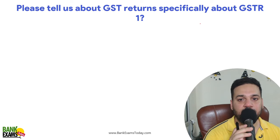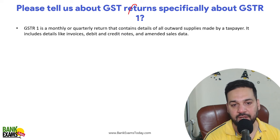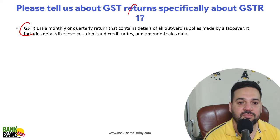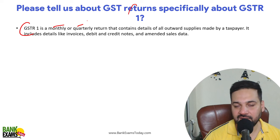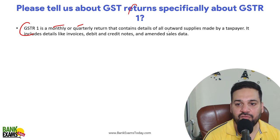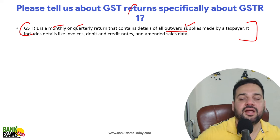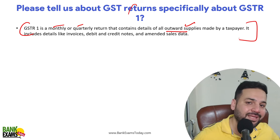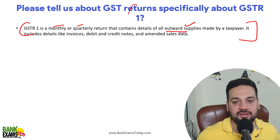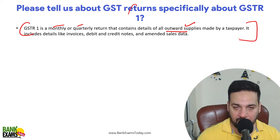Another question: please tell us about GST returns, specifically GSTR 1. GSTR 1 is a monthly or quarterly return — you opt for it — that contains details of all outward supplies made by the taxpayer. If you are able to answer that it is a monthly or quarterly return containing details of all outward supplies, that is a good answer.